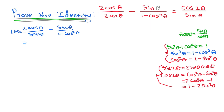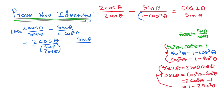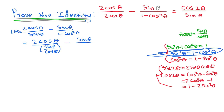So I'm going to write: 2 cos θ over (sin θ over cos θ), minus sin θ over 1 − cos²θ. For 1 − cos²θ, I go back to the identities: 1 − cos²θ equals sin²θ. So I substitute and write sin²θ in the denominator of the second term.